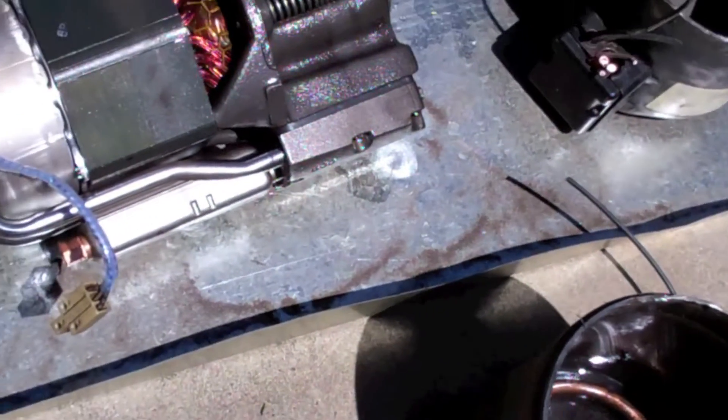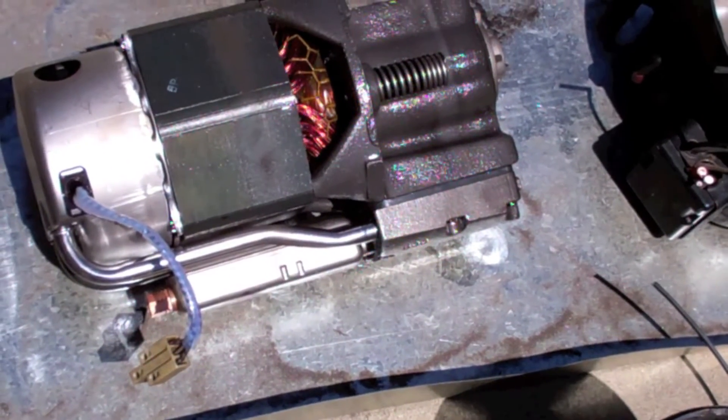I don't know if you can see it there, but these are the wires for the crankcase heater. And there's the pump and the electric motor.